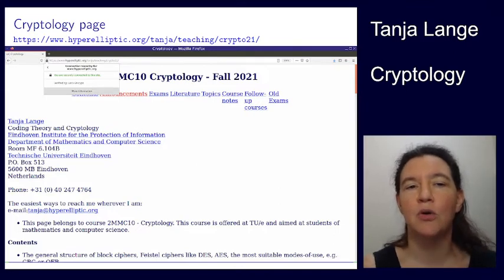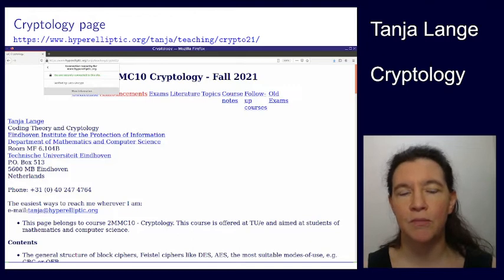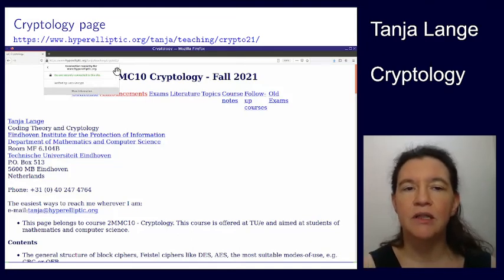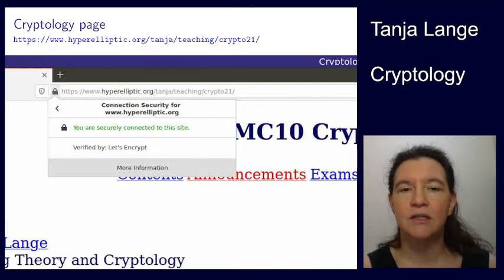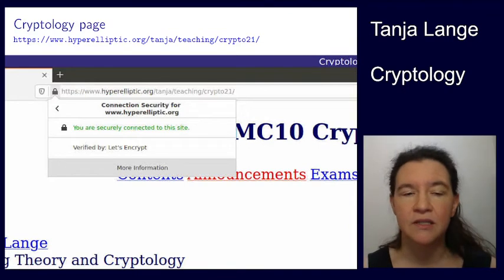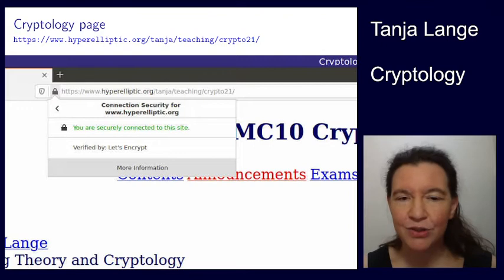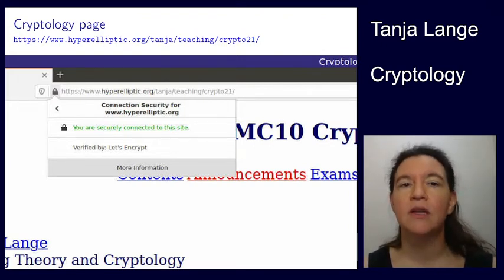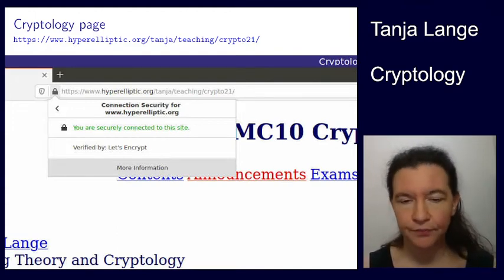For this introductory lecture, I want to point out that you go to the page with HTTPS, and this 'S' stands for secure — so you're connecting to this page in a secure manner. When you click on the lock, you'll see more information, and it helpfully says in green: 'You are securely connected to the site.' As a normal user you should be happy, but as a student in cryptology you should be asking: are you sure? What does it mean? How does it work?